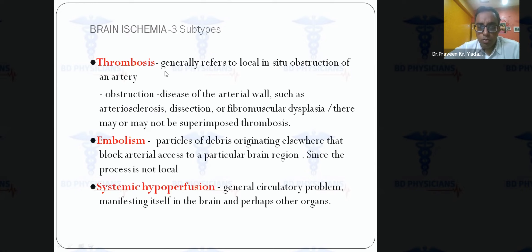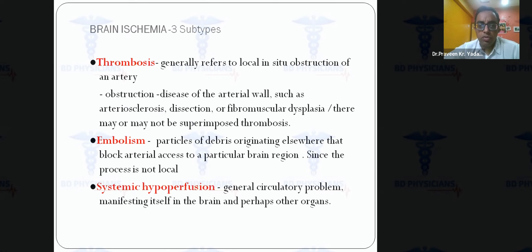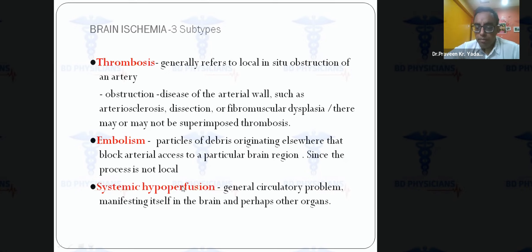Thrombosis refers to local in-situ obstruction of an artery — due to atherosclerosis, unstable plaque rupture, arterial dissection, fibromuscular dysplasia, or vasculitis causing vessel wall inflammation. Embolism originates from a distant site such as the heart or aorta. Any etiology — atherosclerosis, vasculopathy, or vasculitis — can give rise to in-situ thrombosis and stroke.